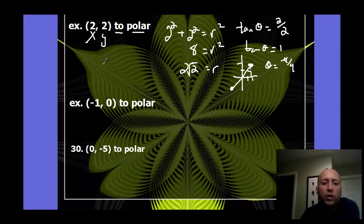So now we can write our polar point. Our polar point is our r value comma our theta value.